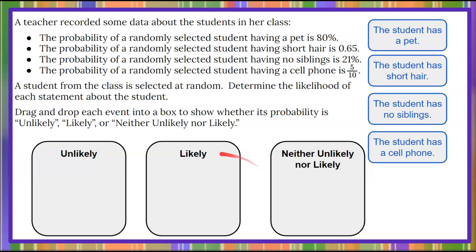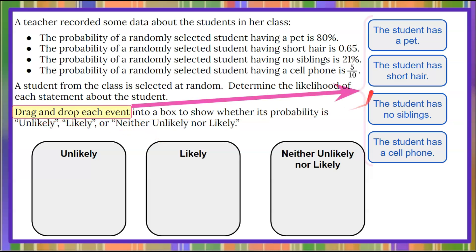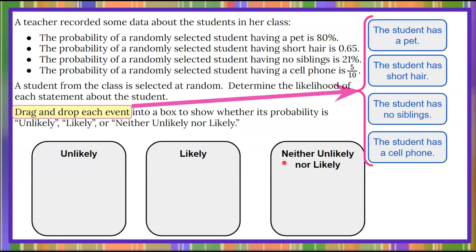Welcome back. Let's review — we're going to drag and drop each of these four events into one of these three categories. To begin, let's make sure we understand unlikely, likely, and neither unlikely nor likely as a probability or a percent.